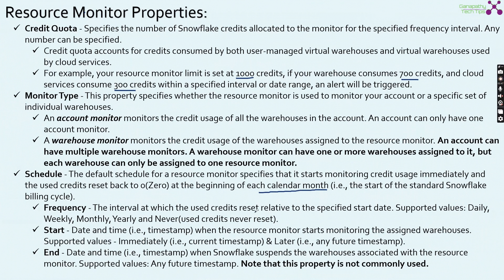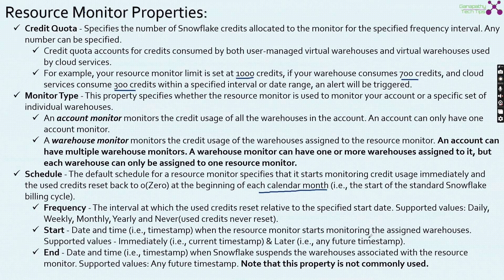Frequency is the interval at which used credits reset relative to the specified start date. Supported values are daily, weekly, monthly, yearly, and never. Most people use monthly because the Snowflake billing cycle happens on a monthly basis. The start parameter defines when the resource monitor starts monitoring the assigned warehouses; supported values are immediately or later.